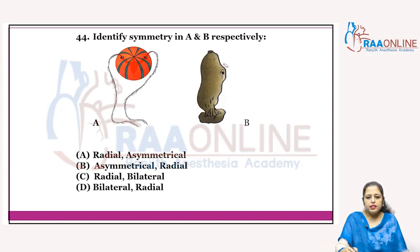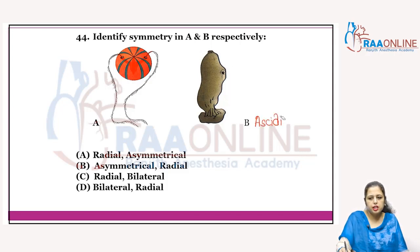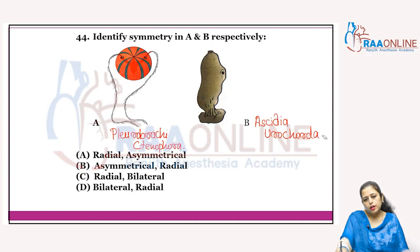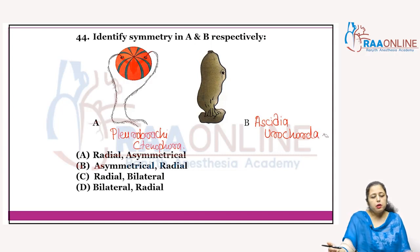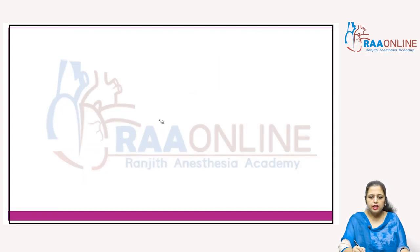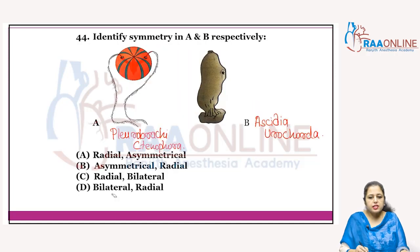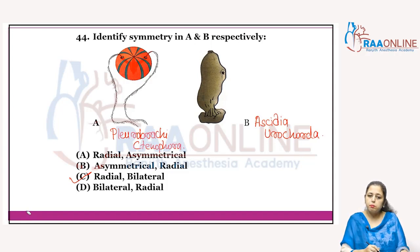Identify the symmetry in A and B. Diagram B is Ascidia, which belongs to the Urochordata phylum. The other diagram is Pleurobrachia, which belongs to Ctenophora. Ctenophora shows radial symmetry. Ascidia (Urochordata) shows bilateral symmetry. Answer is C. Urochordata phylum animals show bilateral symmetry.